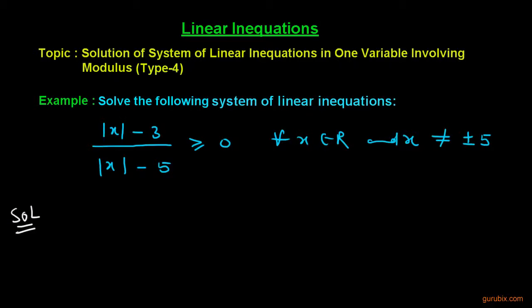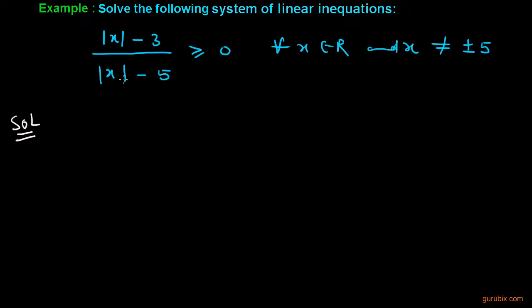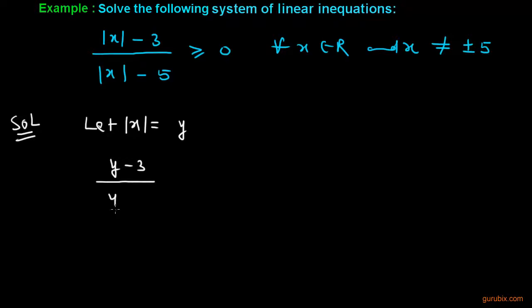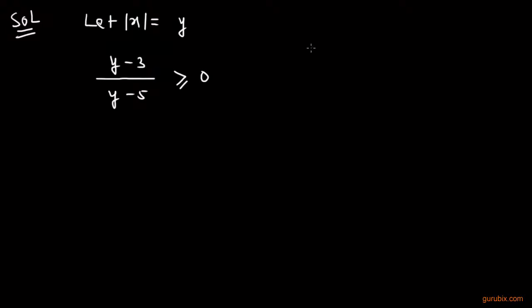Welcome friends. Let us solve another type of linear inequality which involves modulus. Here is the linear inequality that we have to solve. First of all, we shall let mod x equal to y, then our inequality will be: (y minus 3) over (y minus 5) greater than or equal to 0.